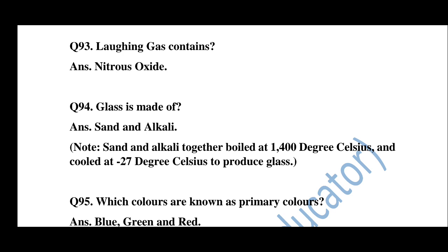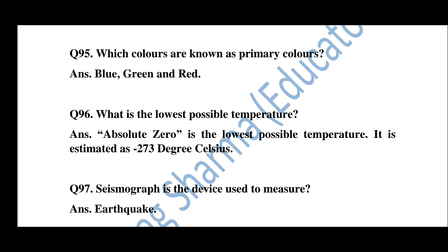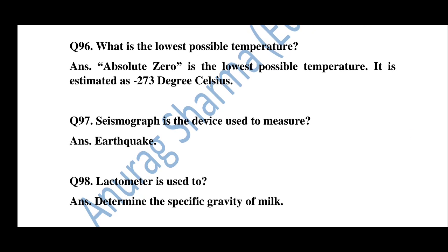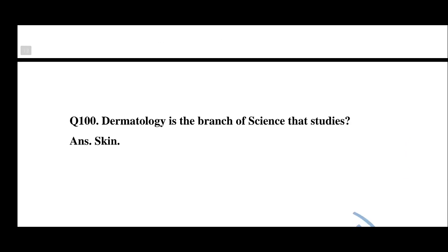Question number 93: Laughing gas is nitrous oxide. Question number 94: Glass is made of sand and alkali, boiled at 1400 degrees Celsius and cooled at minus 27 degrees Celsius. Question number 95: Primary colors are blue, green, and red. Question number 96: The lowest possible temperature is absolute zero, estimated at minus 273 degrees Celsius. Question number 97: Seismograph is used to measure earthquakes. Question number 98: Lactometer is used to determine the specific gravity of milk. Question number 99: Dynamo is used to convert mechanical energy into electrical energy. Question number 100: Dermatology is the branch of science that studies the skin.